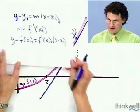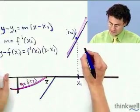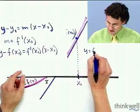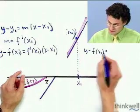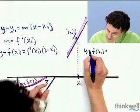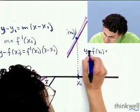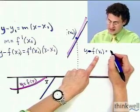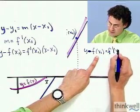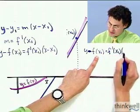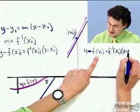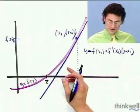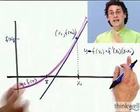So let me write that down right over here. y minus f of x1 equals f prime of x1 times x minus x1. There's the equation of the line.